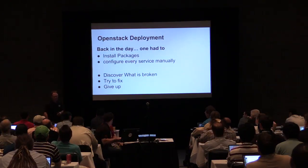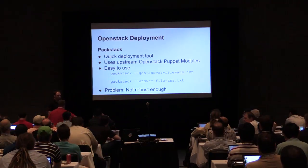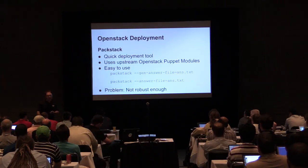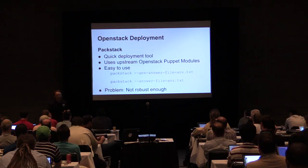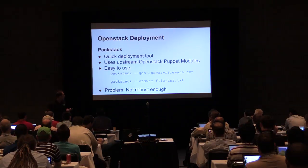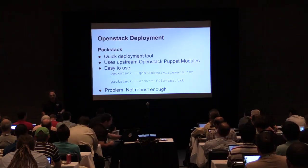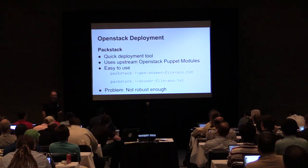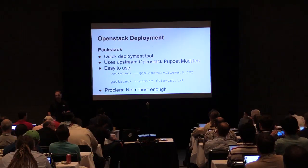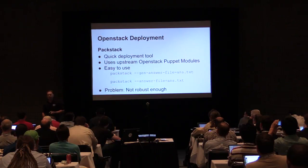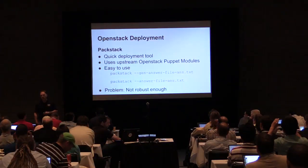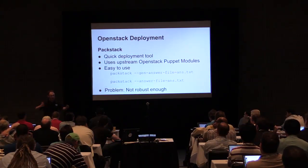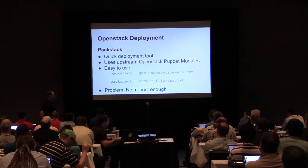Then we introduced PackStack, which is basically a quick deployment tool for OpenStack. A single command-line tool lets you set up all the settings and layout for OpenStack services. You generate an answers file, configure it — all configuration in one centralized place — and then run PackStack with that answers file, which runs Puppet and makes all the configurations and deployment for OpenStack. But the problem is that PackStack is not robust enough. If you need to go from one layout to another or expand a proof-of-concept deployment, that becomes very problematic.